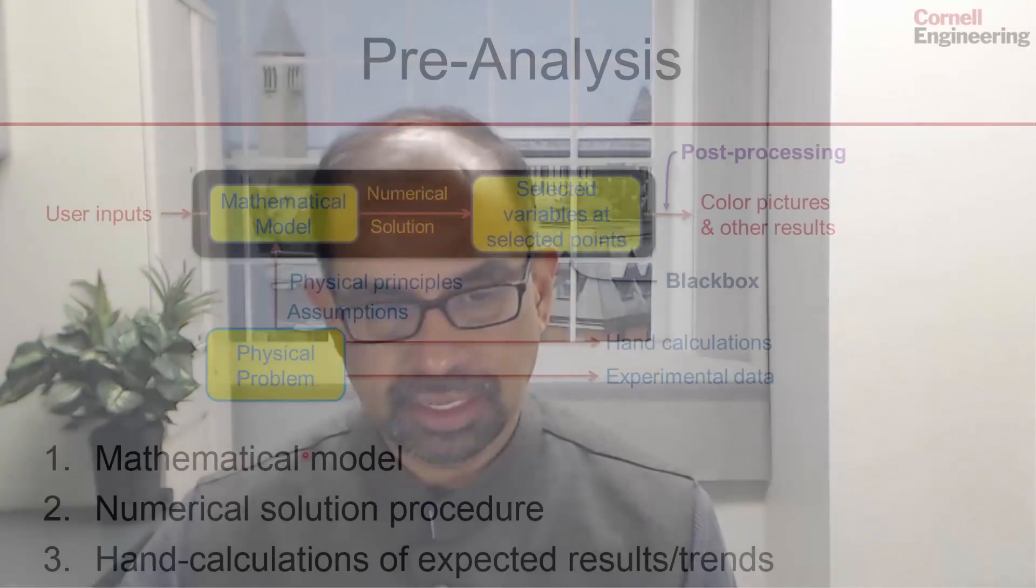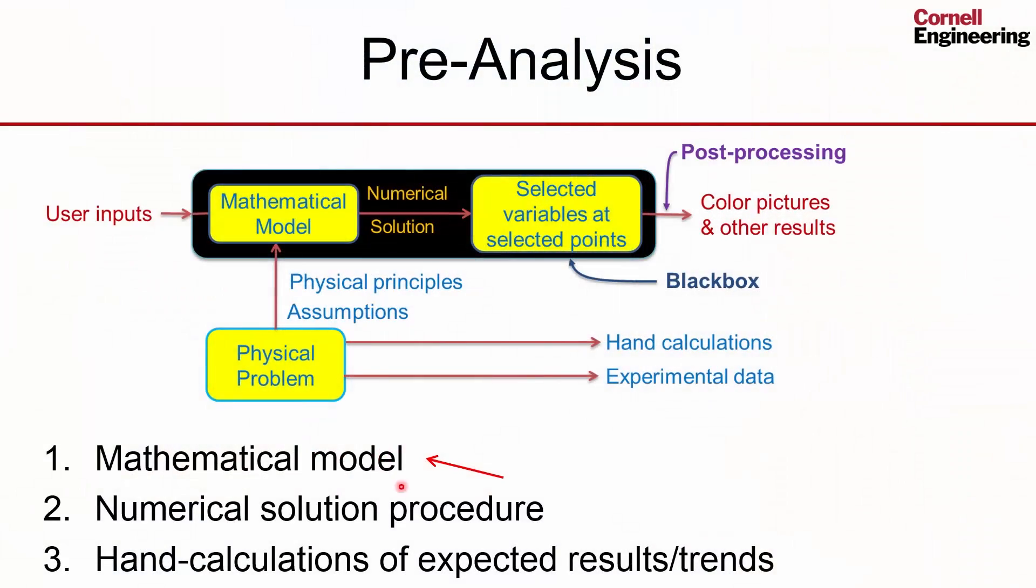Here we'll take a look at the mathematical model which is the first element of pre-analysis. The physical problem is 3D. The mathematical model we will use is axisymmetric, so there's an axisymmetric assumption built into the mathematical model.